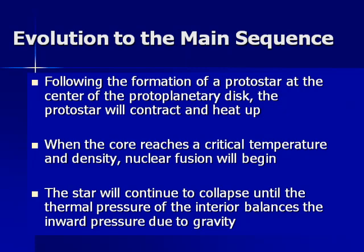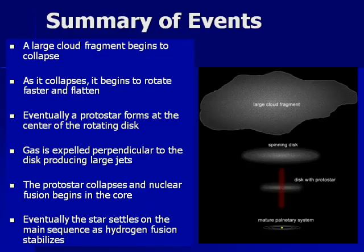In summary, all stars form very similarly: we start with a molecular cloud, which fragments to form a protostar surrounded by a protoplanetary disk. The protostar contracts and heats up; when it reaches a critical temperature and sufficient density, nuclear fusion begins. The star continues to collapse until the thermal pressure from the core becomes balanced with the gravitational pressure from outside. The molecular cloud fragments, a disk forms, a protostar forms at the center, and that protostar eventually stabilizes as nuclear fusion begins to form a star. That's it for today's lecture.